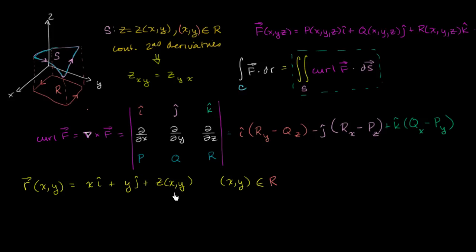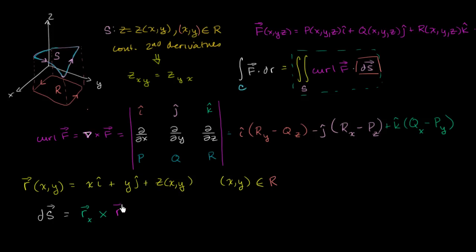Now that we have a parameterization for our surface, we're ready to start thinking about what dS might be. dS is going to be the cross product of the partial derivatives of the parameterization with respect to each of the parameters, times the little chunk of area in that domain. So you can view it as the partial of r with respect to x, crossed with the partial of r with respect to y, and that whole vector times dA.